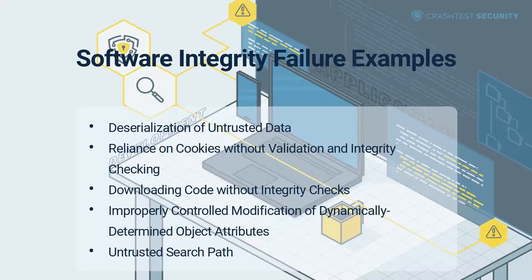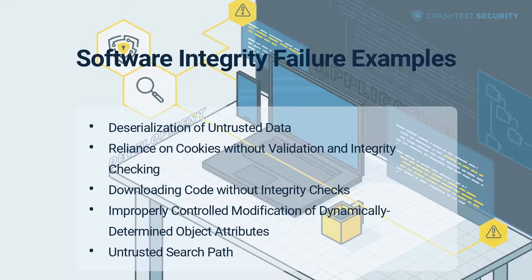Some commonly manifested software integrity security misconfigurations include deserialization of untrusted data. Deserialization converts a sequence of byte streams to their original form — objects. If the application does not appropriately verify the validity of the original object data during deserialization, attackers can tamper with the input payload object to coerce the application to execute malicious code. Insecure deserialization can also lead to malicious code injection to alter the application logic or execute arbitrary commands with escalated privileges.